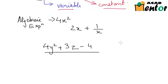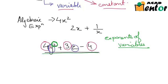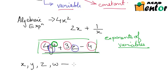How about 4y² + 3z - 4? This also is an algebraic expression. As you can see, any algebraic expression is a combination of constants — circled in red — and variables, circled in blue. It also has powers or exponents of variables. So this complete thing is nothing but an algebraic expression.